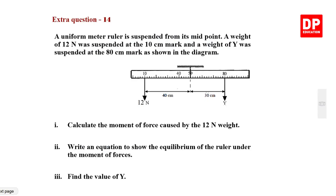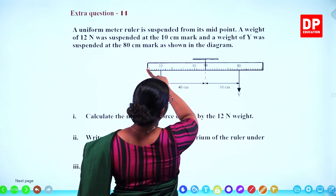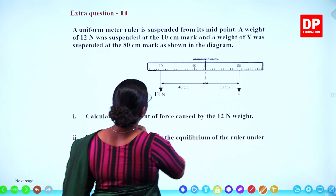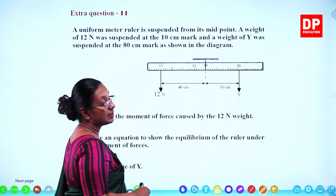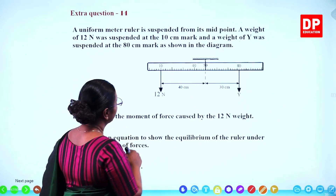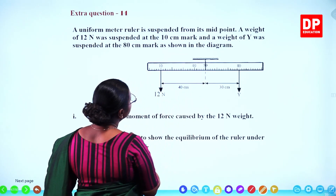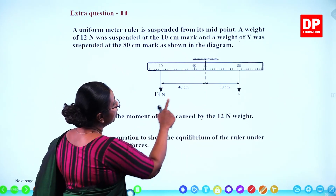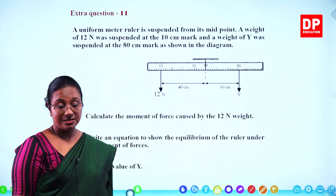Extra question 14: a uniform meter ruler is suspended from its midpoint (50 cm mark). A weight of 12 N is suspended at the 10 cm mark, which is 40 cm from the midpoint. A weight Y is suspended at the 80 cm mark, which is 30 cm from the midpoint. The distances from the midpoint to each weight are 40 cm and 30 cm respectively.